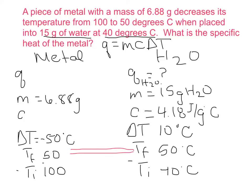On the metal side, we are asked to find the specific heat of the metal, and we also do not know the q of the metal. Therefore, we are going to need to find it. What we do know is that q of the metal is equal in magnitude but opposite in sign to q of the water.